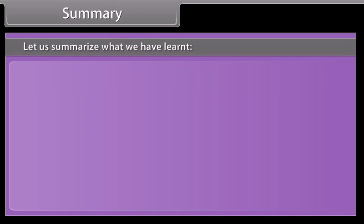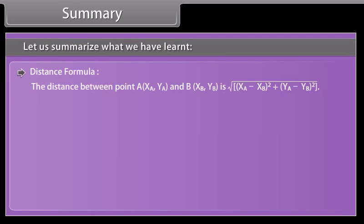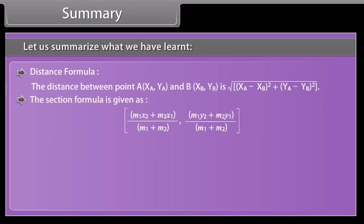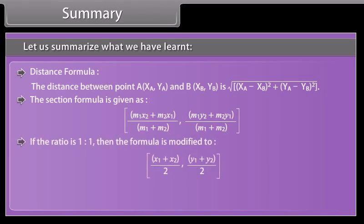Summary. Let us summarize what we have learned. The distance formula: the distance between point A(XA, YA) and B(XB, YB) is under root of XA minus XB whole square plus YA minus YB whole square. The section formula is given as: m1·x2 plus m2·x1 by m1 plus m2, and m1·y2 plus m2·y1 by m1 plus m2. If the ratio is 1 to 1, the formula is modified to the midpoint formula.